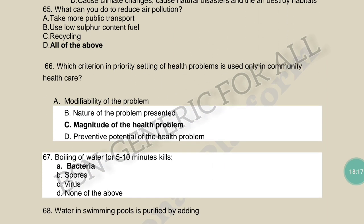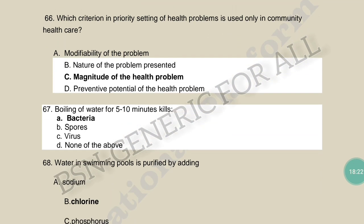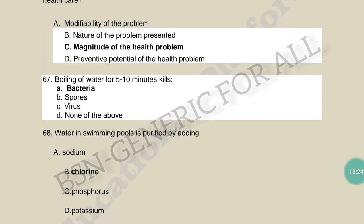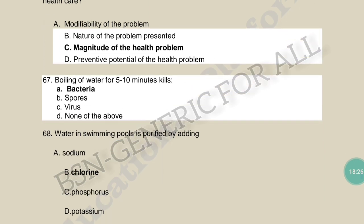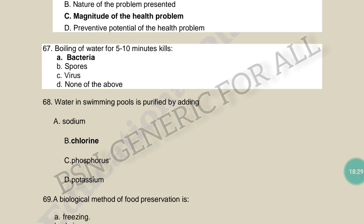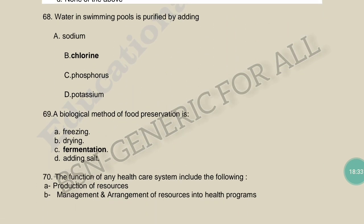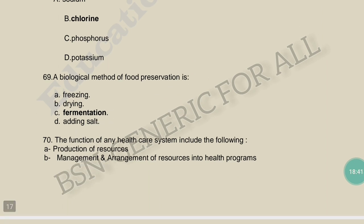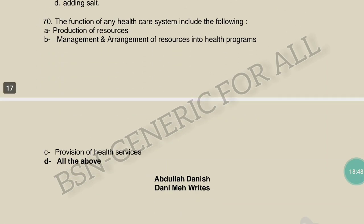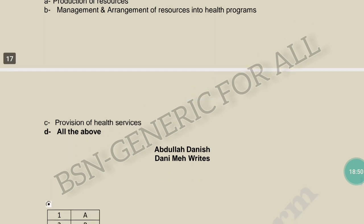Which criterion used in priority setting of health problems is used only in community health care? The magnitude of the health problem. Boiling water for 5 to 10 minutes kills bacteria. Swimming pool water is purified by adding chlorine. Biological method of food preservation is fermentation. The function of any healthcare system includes production of resources, management, arrangement of resources, and provision of health services — all of the above.